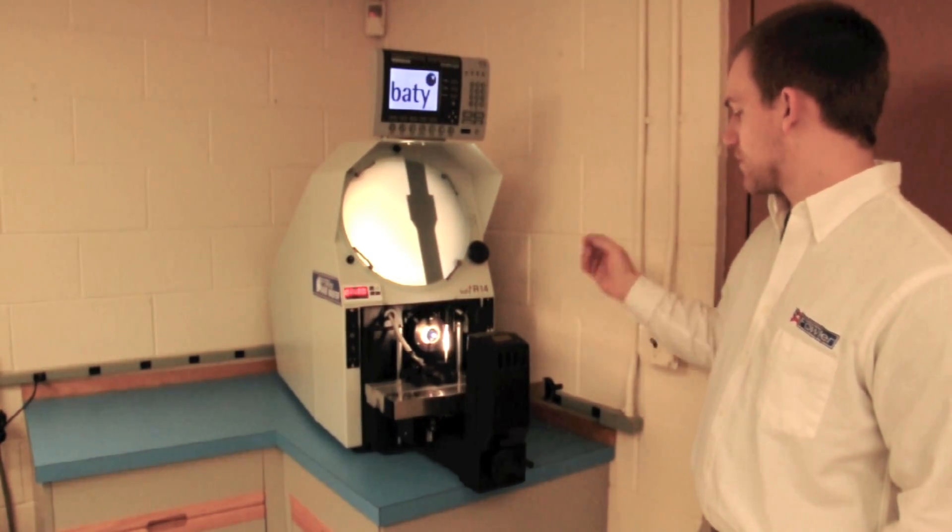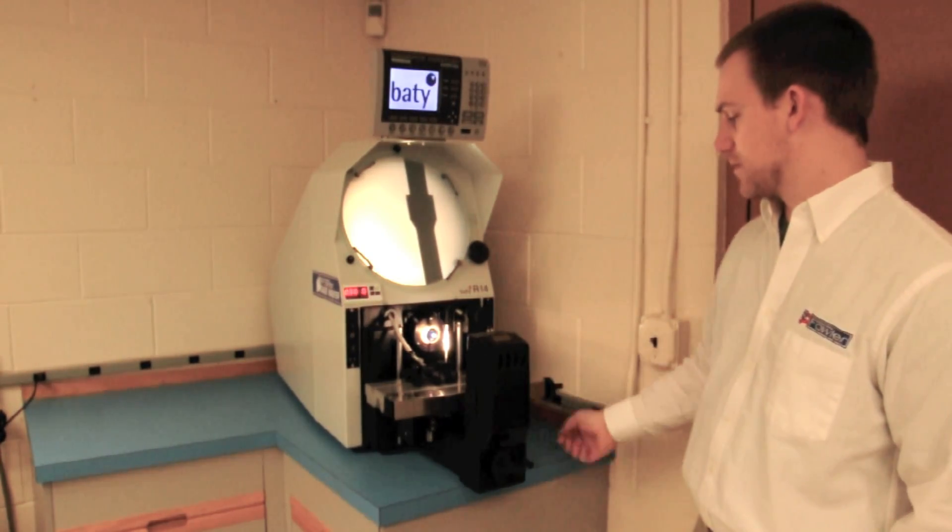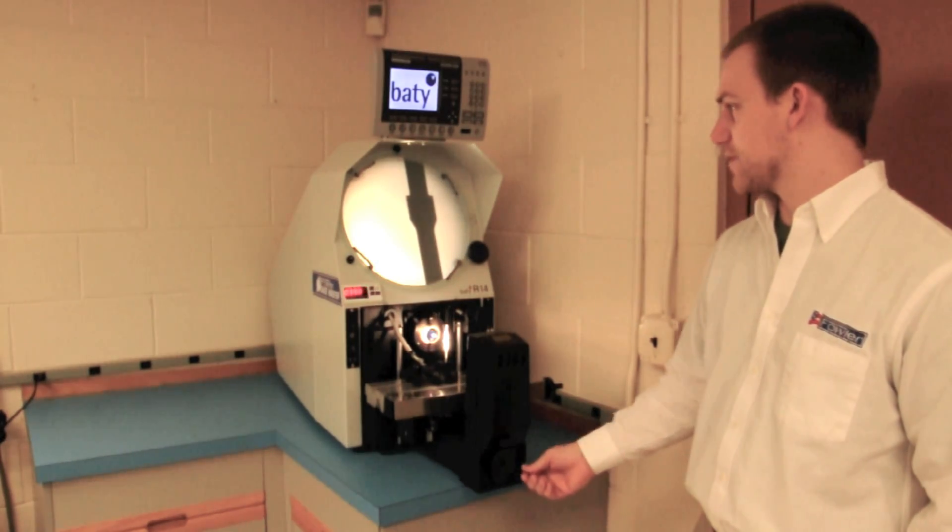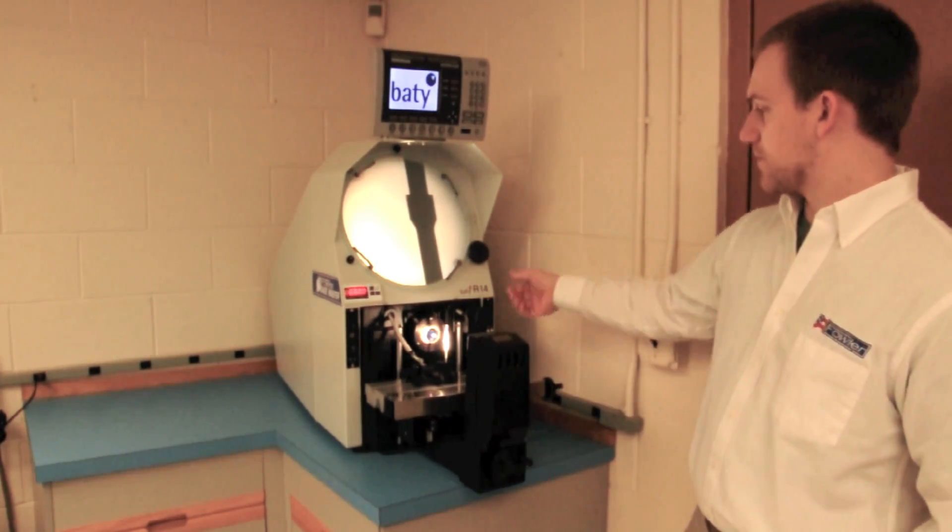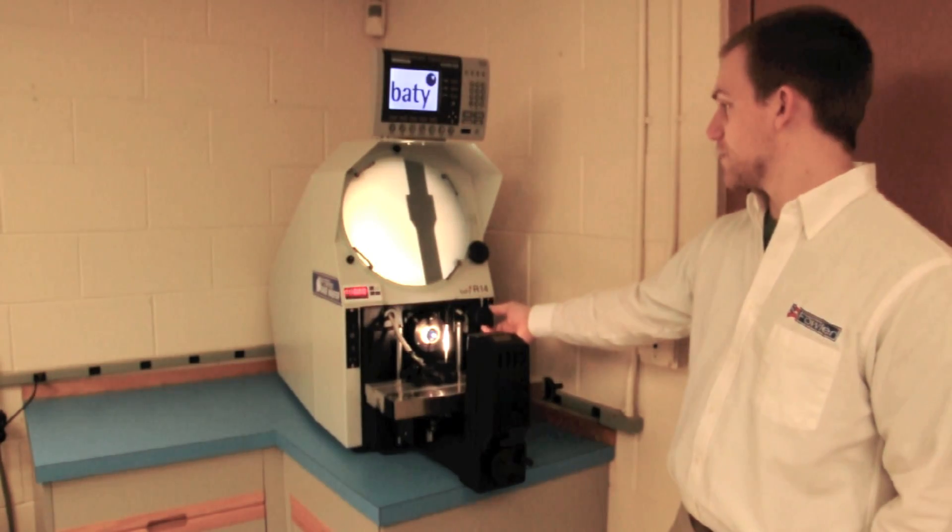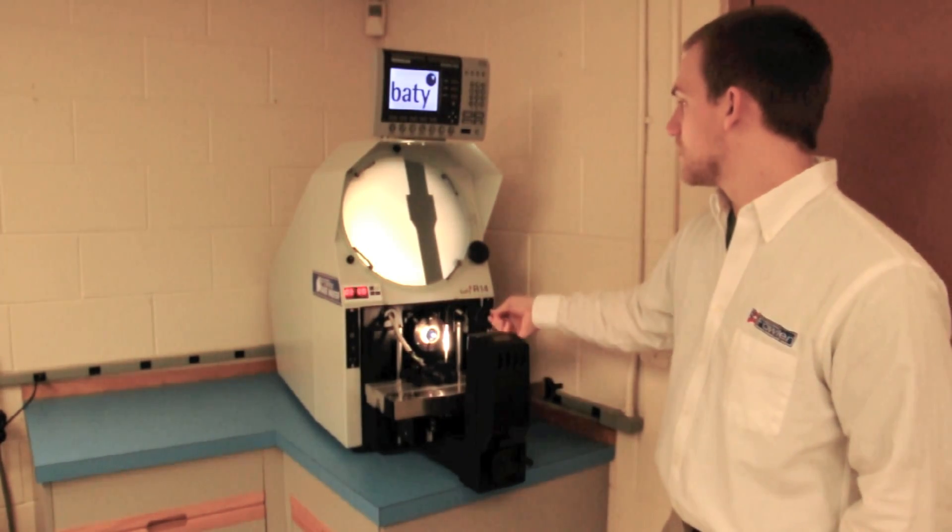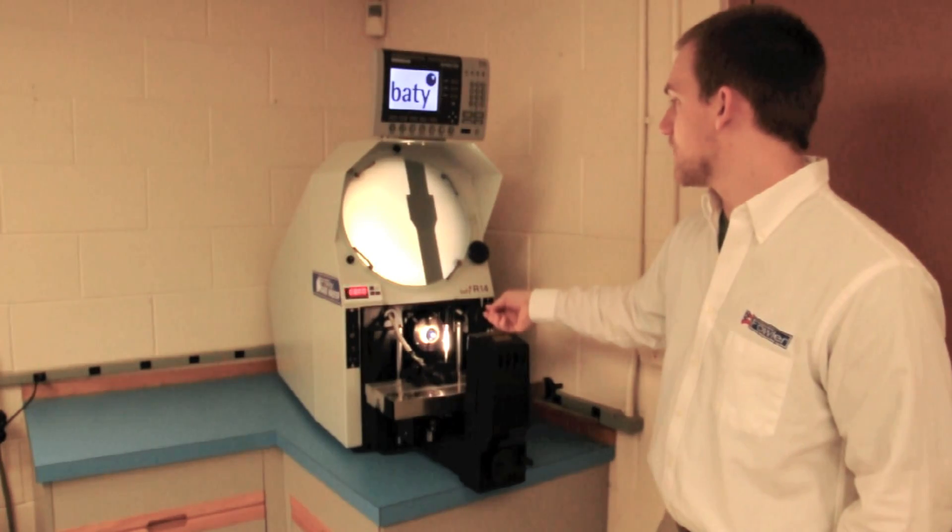The stage is controlled in the x-direction by this knob here and the z-direction by this knob here. There's another knob on the face of the machine which is used to bring the measured object into focus.